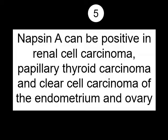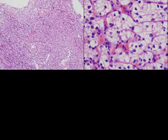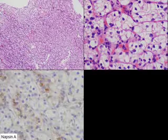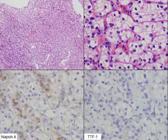Fifth important fact: Napsin A can be positive not just in lung adenocarcinomas, but in adenocarcinomas of other kinds — specifically in renal cell carcinoma, papillary thyroid carcinoma, and clear cell carcinomas of the endometrium and ovary. Here is a clear cell carcinoma of the kidney showing beautiful cytoplasmic granular Napsin A positivity, while TTF1 is completely negative. So be cognizant of the fact that Napsin A doesn't just stain lung.